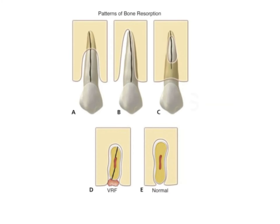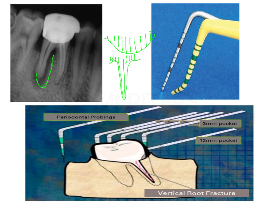For vertical root fractures, it is better to use a plastic probe rather than a steel probe. A plastic probe can go all the way into the sulcus and reach the area of the defect. Because the plastic probe is more flexible, it can bend and follow the J-shaped radiolucency to the full extent of the defect.